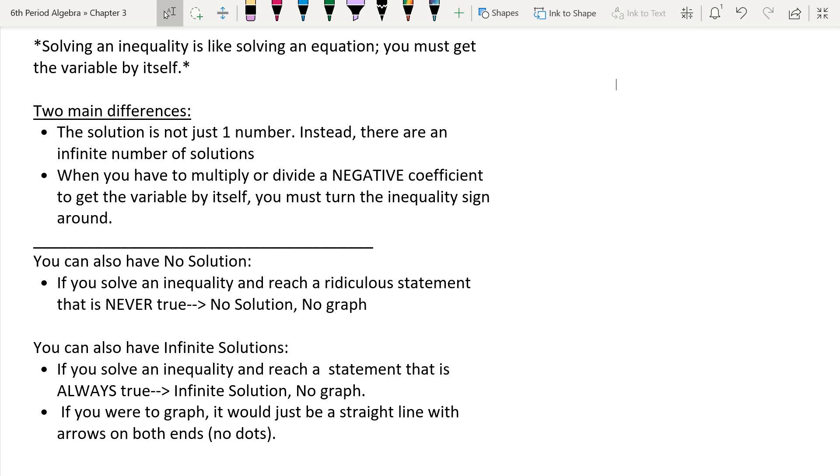So, I'm just going to read it. Generally, solving multi-step inequalities is just like solving a one-step inequality. We just want to try to think of them like we're solving equations, like back in Chapter 1, back in your last year's math class, because our goal is still to get the variable by itself on one side of the inequality symbol.